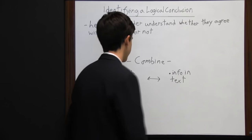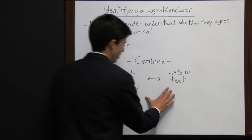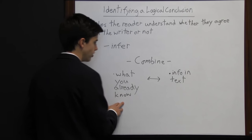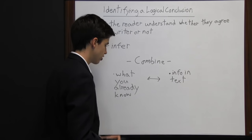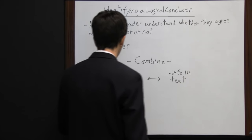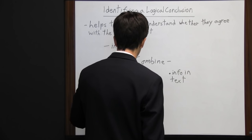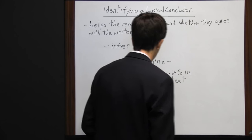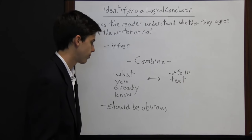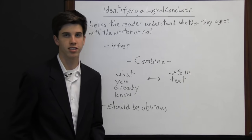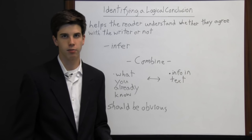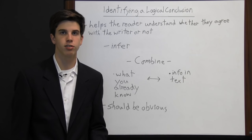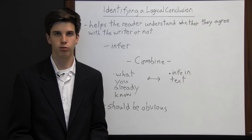You're going to combine what you already know with the information found in the text. You pull these two things together to draw the conclusion. Generally, a conclusion should be obvious — if a writer does a good job, the conclusion should be easily identifiable. Otherwise, you may draw a conclusion that's not what the writer had in mind. Nevertheless, it's important that you as the reader analyze the writing and identify the logical conclusion.